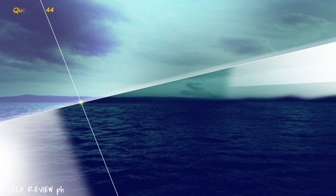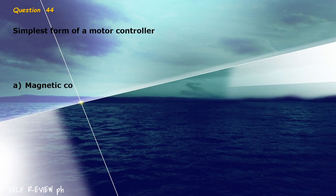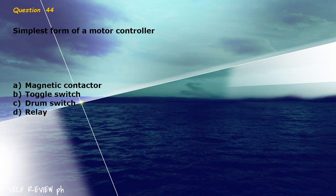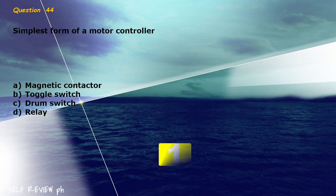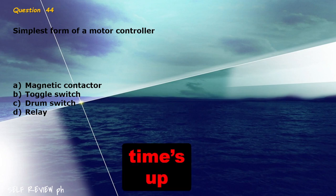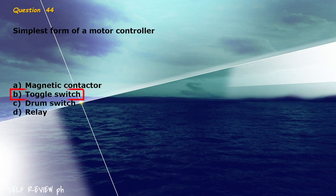Question 44: Simplest form of a motor controller. A) magnetic contactor, B) toggle switch, C) drum switch, D) relay. The correct answer is letter B, toggle switch.